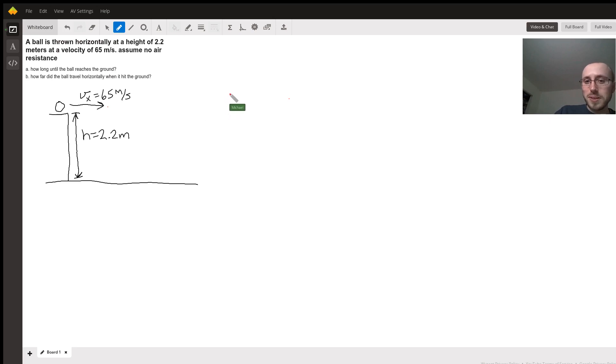we'll recall that the distance that you travel in the y direction is going to be equal to 1/2 g, being the acceleration due to gravity, t squared, t being your time, plus whatever your initial velocity is in the y direction times time, plus whatever your initial height in the y direction is.